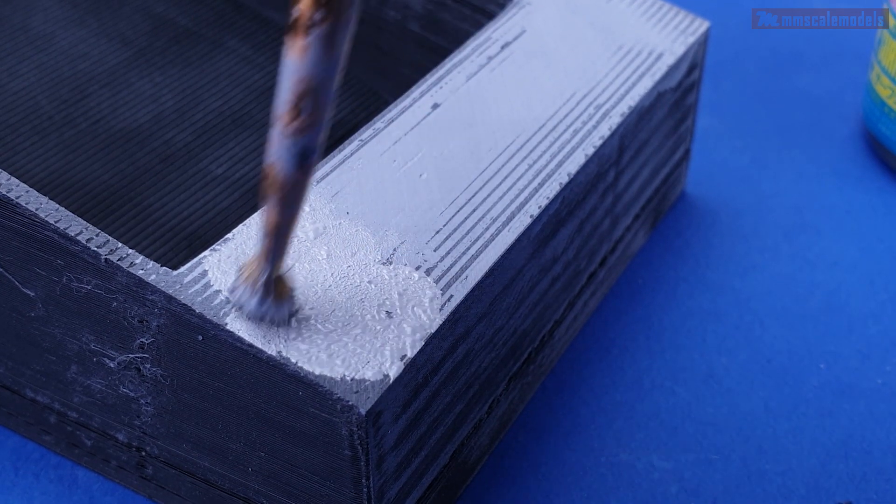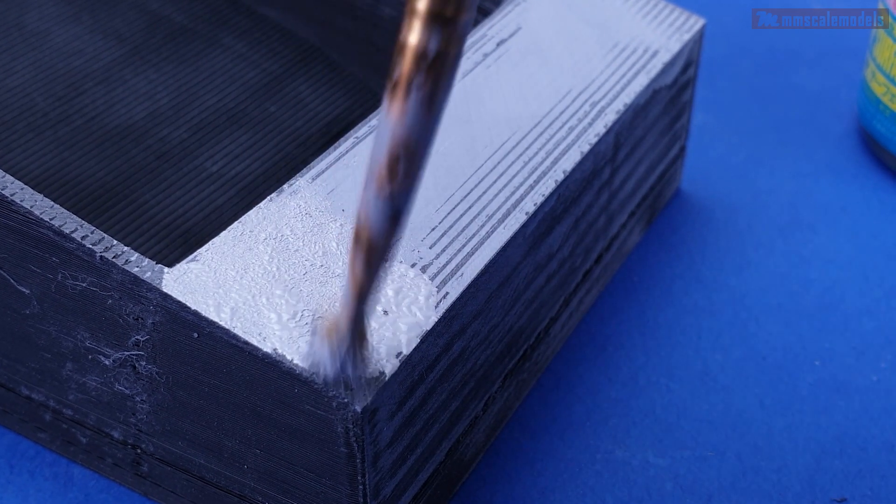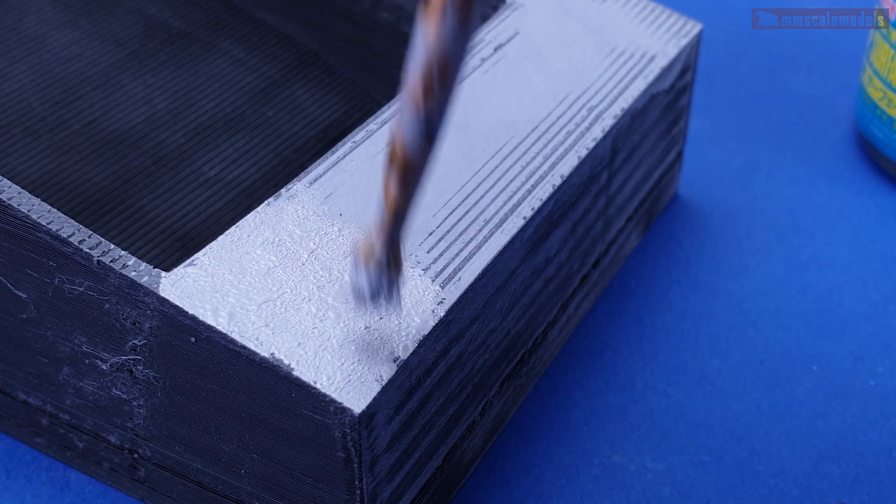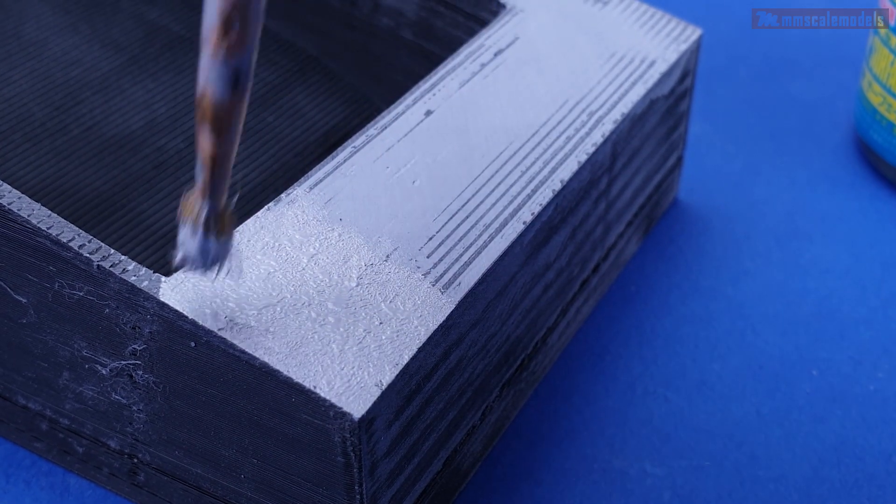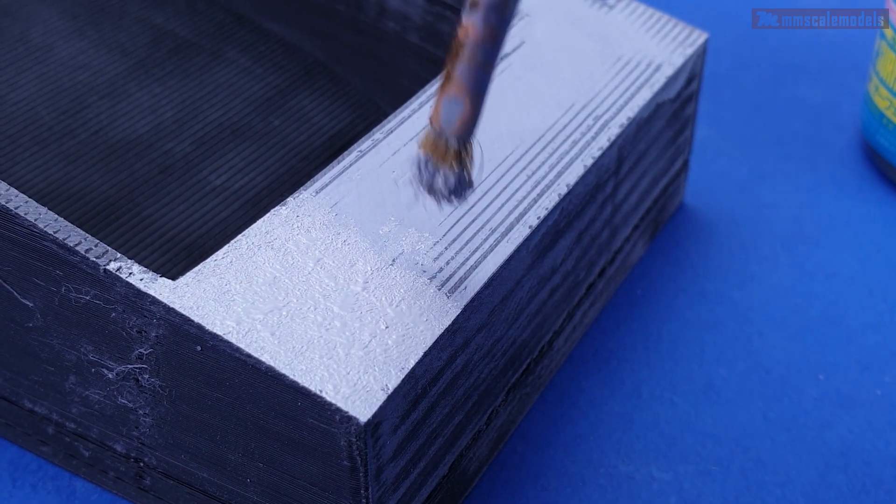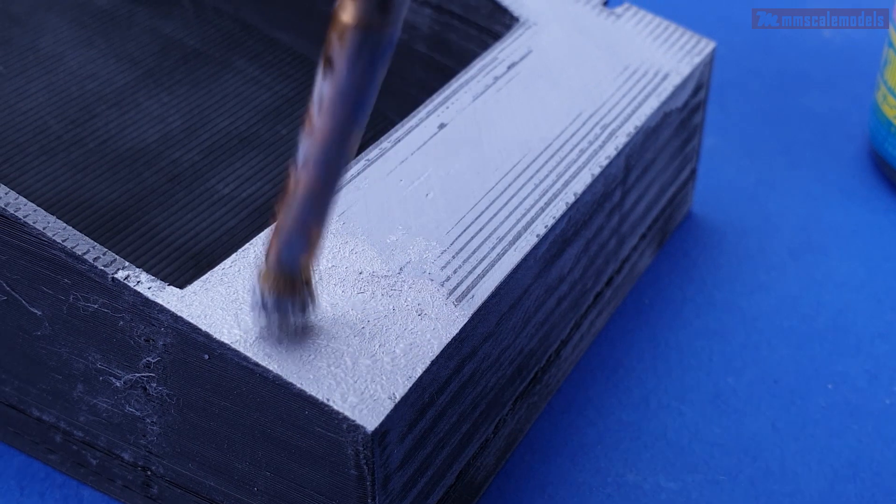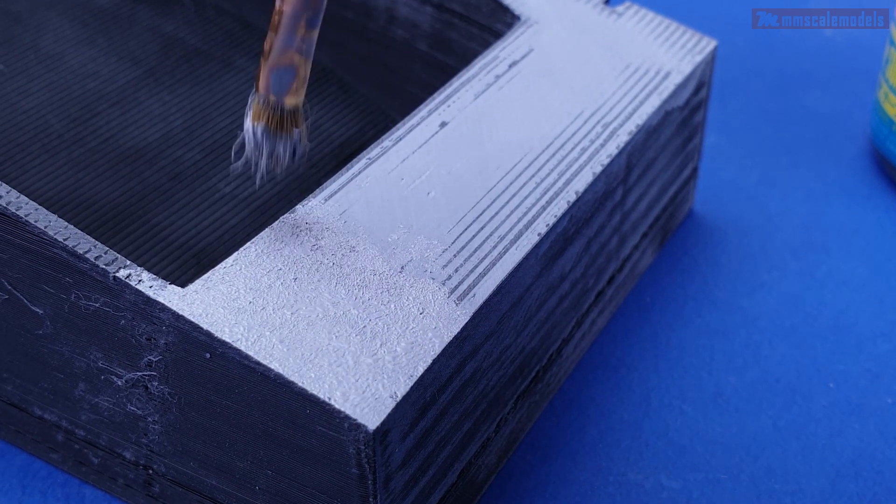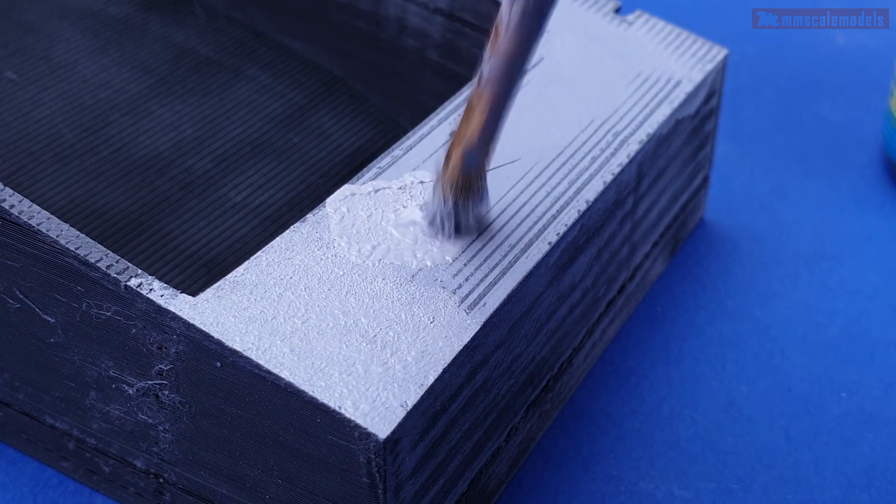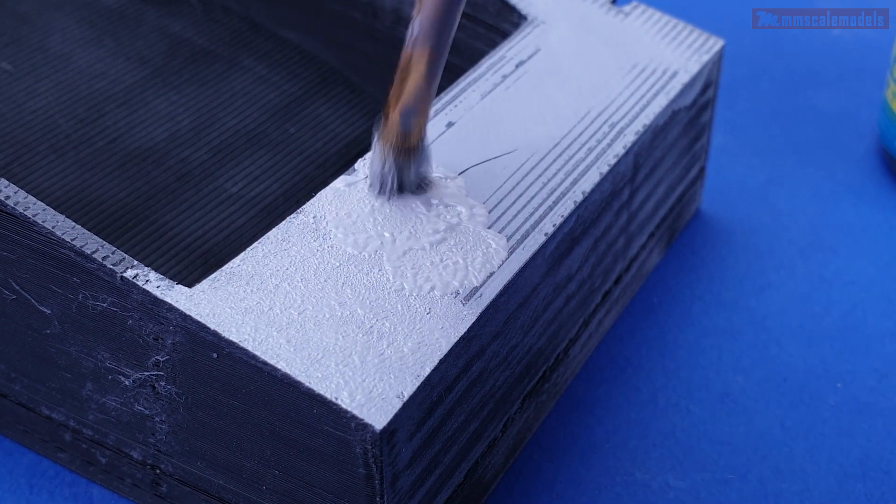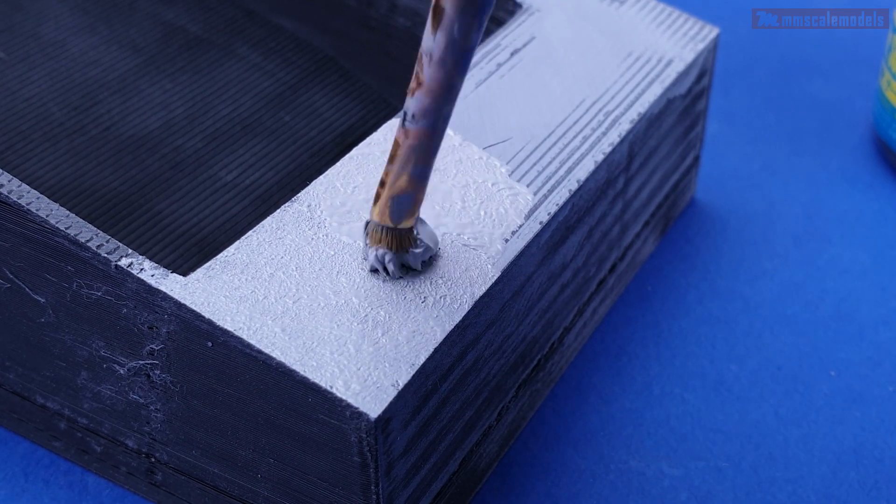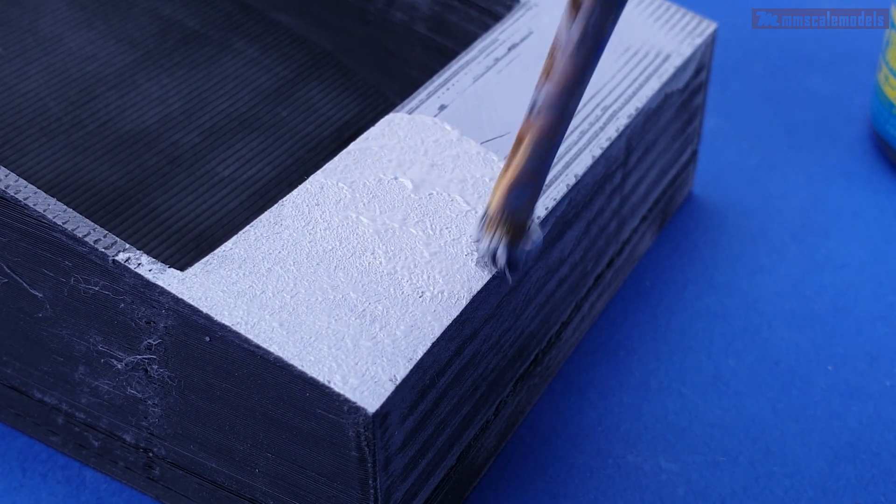On the garage facade I switched to application with an old brush. It is definitely more controllable this way and unless you use very bad quality brush there is no risk of pieces of it to stick to the surface. Also the brush can be reused although it does not look like that. A quick bath in acetone and it is ready for more stucco application. On the downside the brush application method does not provide as good of a texture as the sponge.